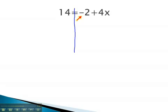Notice, we have a negative 2. The opposite of a negative 2 is a positive 2. And if we add 2 on the right side, we also must add 2 to the left side. Notice, the 2's subtract out to 0, and all that remains on the right side is the 4x. On the left side, 14 plus 2 is 16.